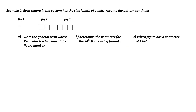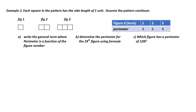Example 2. This is a visual problem. Each square in the pattern has a side length of one unit. Assume the pattern continues. Part A: write the general term where the perimeter is a function of the figure number. I'm going to create a chart to organize my information. For figure number 1, the perimeter is 4. For figure number 2, the perimeter is 6. For figure number 3, the perimeter is 8.